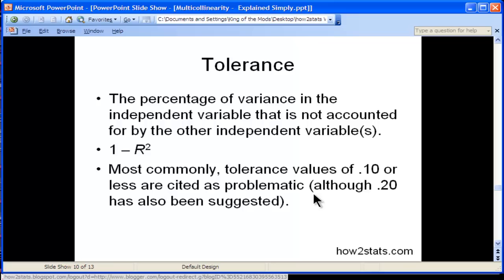So tolerance, a lower number, suggests there's less tolerance associated with the analysis, and that the standard errors and beta weights will become progressively unstable. In practice, we want larger tolerance levels than 0.10, and some people suggest 0.20.